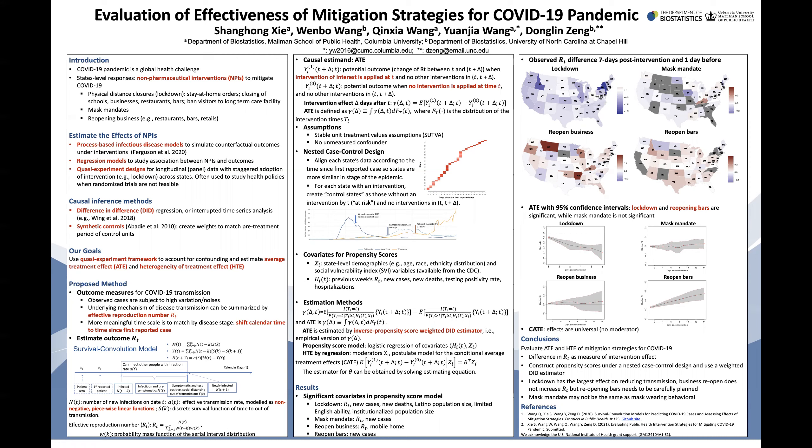For the causal estimate ATE, here are the two potential outcomes. The intervention effect d days after time T is the expectation of the difference between the two potential outcomes. Since we do not have enough data at one specific time T, our ATE is defined as the average over all possible time T. We have SUTVA assumptions and also assume that there is no unmeasured confounding.